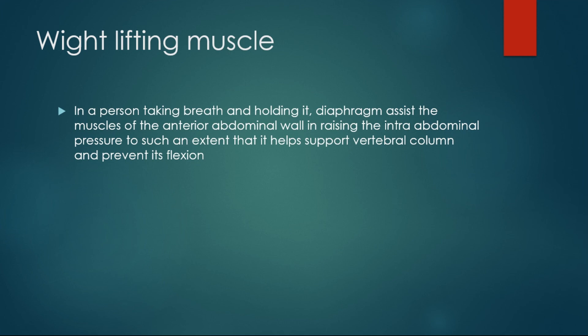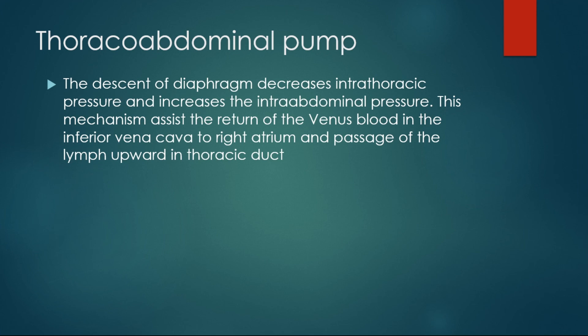As a thoracoabdominal pump: blood travels to the heart against gravity and needs pressure to be pushed upward. When the diaphragm contracts, its descent decreases intra-thoracic pressure and increases intra-abdominal pressure. Since things travel from high to low pressure, blood travels from the abdomen toward the thoracic cavity. This mechanism assists the return of venous blood in the inferior vena cava to the right atrium, and the same is true for lymph.